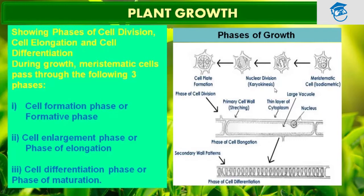Because of the cell plate formation, a primary cell wall forms. There is a large vacuole present in the plant cell, along with the nucleus and a thin film of cytoplasm. During the phase of elongation, because of the stretching, the cell elongates and then gets converted into a mature cell. In the mature cell, a secondary wall pattern has formed — that's why this phase is called the phase of cell differentiation.